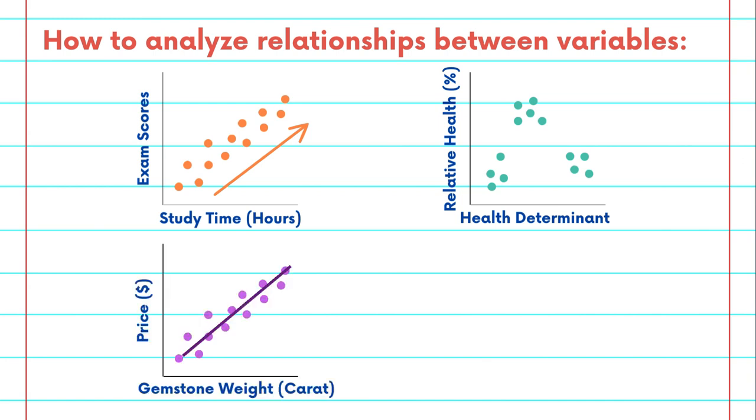Adding a trend line to your scatterplot allows you to quantify that relationship. This line can help make predictions, understand causality, and uncover other hidden insights.